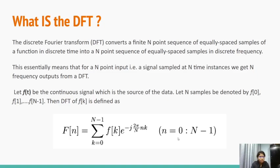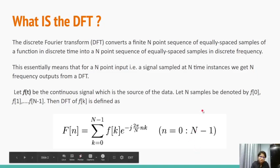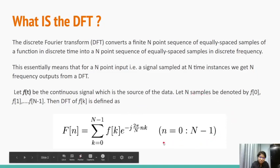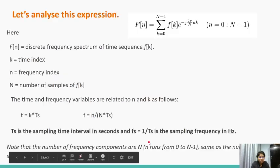If f is the continuous signal which is sampled and f is a discretized sample, then the DFT of f is given by this formula. Note that the small n goes from 0 to capital N minus 1.